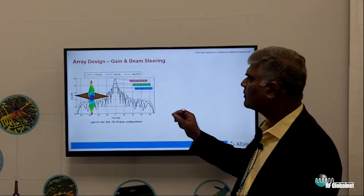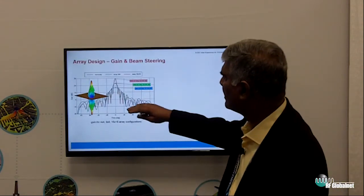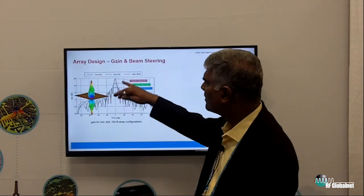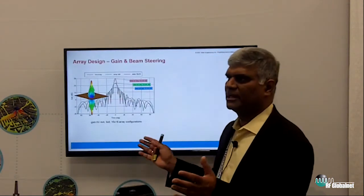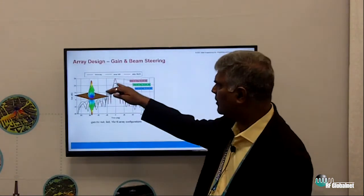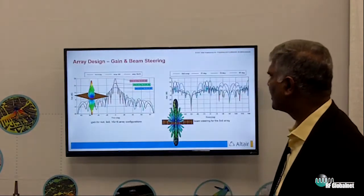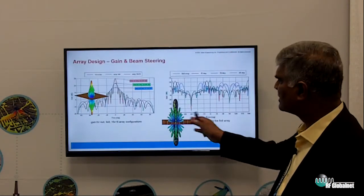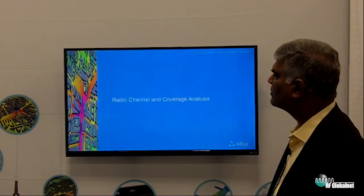We can also have different array sizes here and their gains. The larger the array, the more the gain, which means less beam width. For an 8x8, you can also see the scanning performance of it as you go.